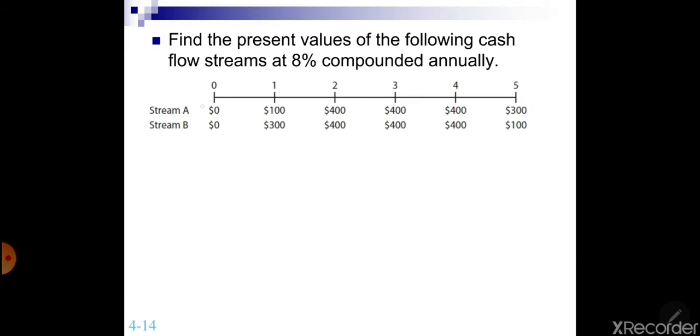There are two streams over here, stream A and stream B. At stream A, you can see that at the end of year 1, there is 100. At the end of year 2, 400. At the end of year 3, 400 again. At the end of year 4, 400. And at the end of year 5, 300. Similarly, stream B, you can also see that the cash flows are fluctuating. So both of the streams are uneven cash flow streams.